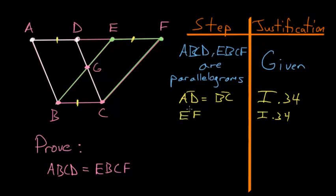So, EF equals BC. And due to common notion number 1, we know that since both of these are equal to BC, that means they're equal to each other. So, AD is equal to EF